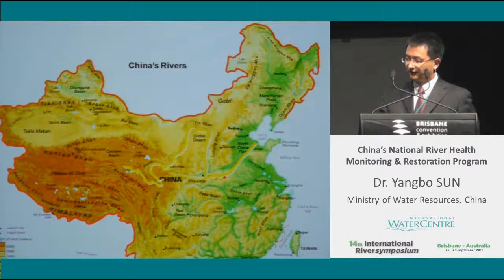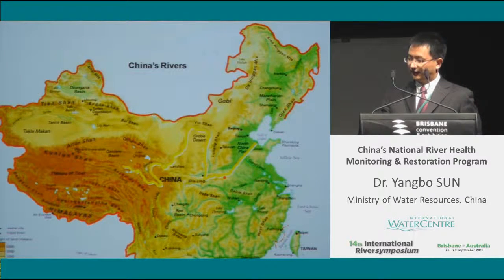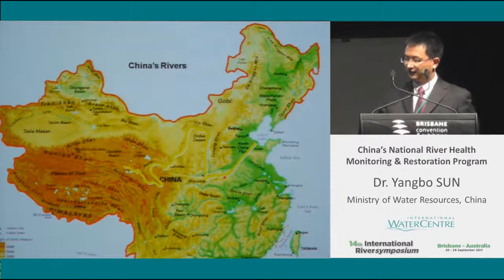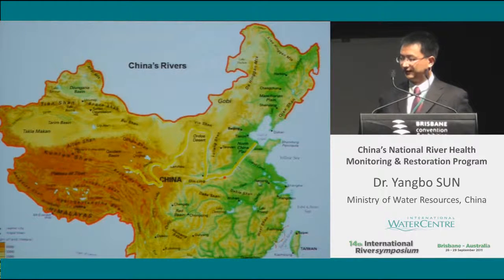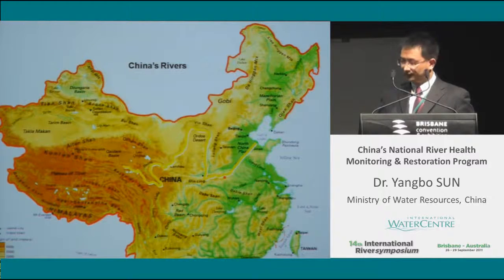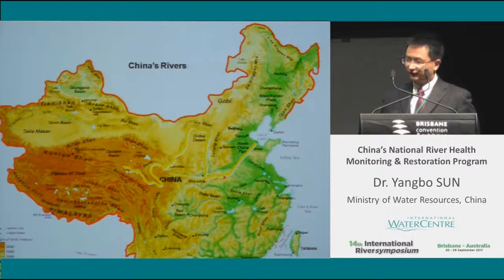Taking the Yellow River basin as an example: it flows across nine provinces, starting from Qinghai province and emptying into the sea from Shandong province. Each province has the same scale as a state in Europe. The Henan province alone has almost 100 million people living in its area. The total Yellow River length is more than 5,500 kilometers, which means we have big rivers in China.